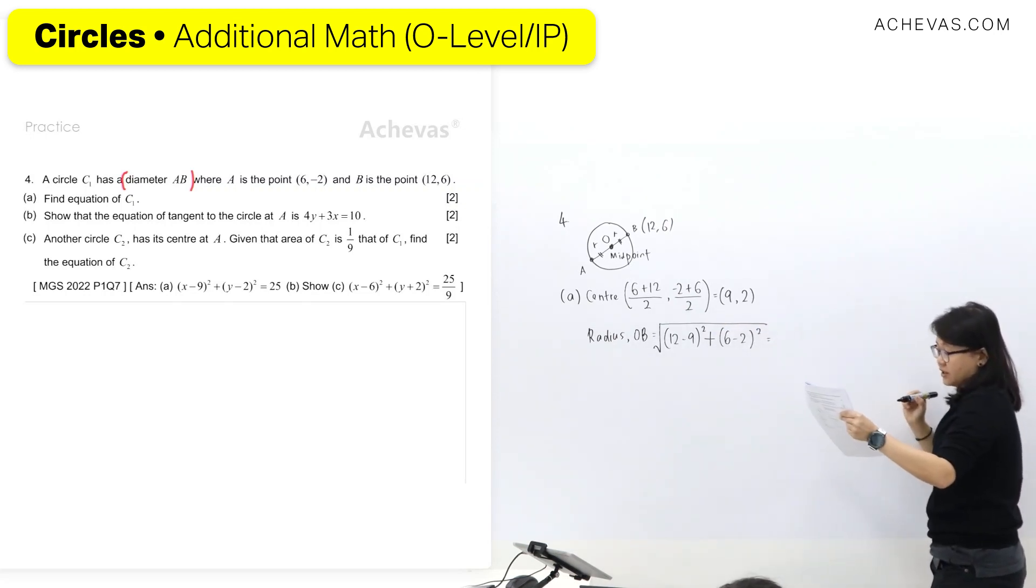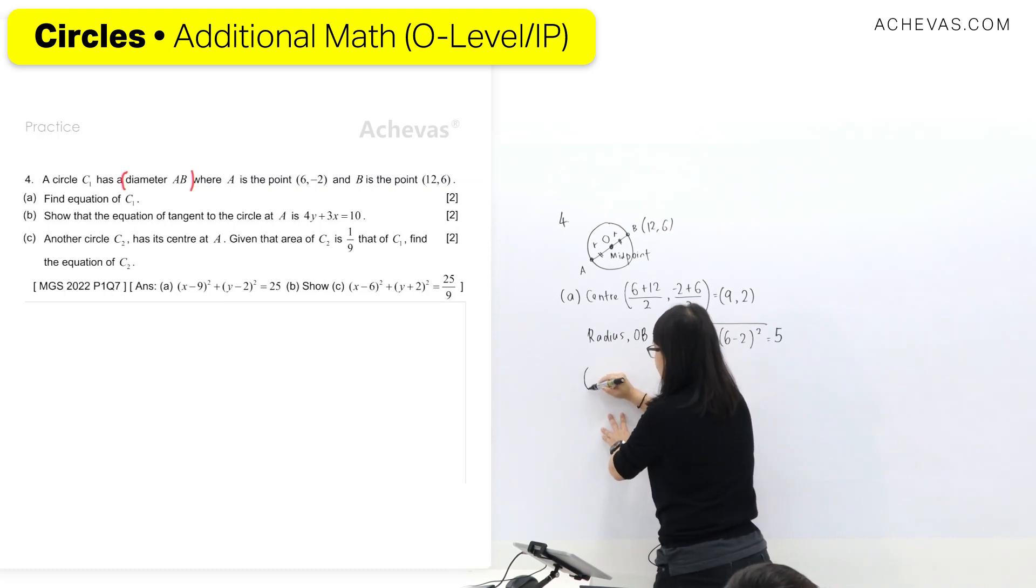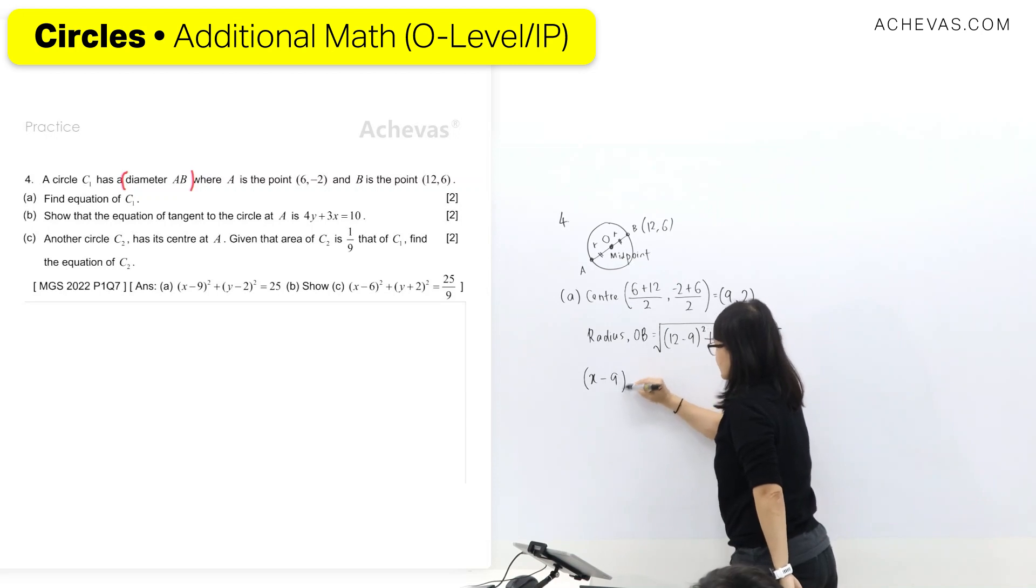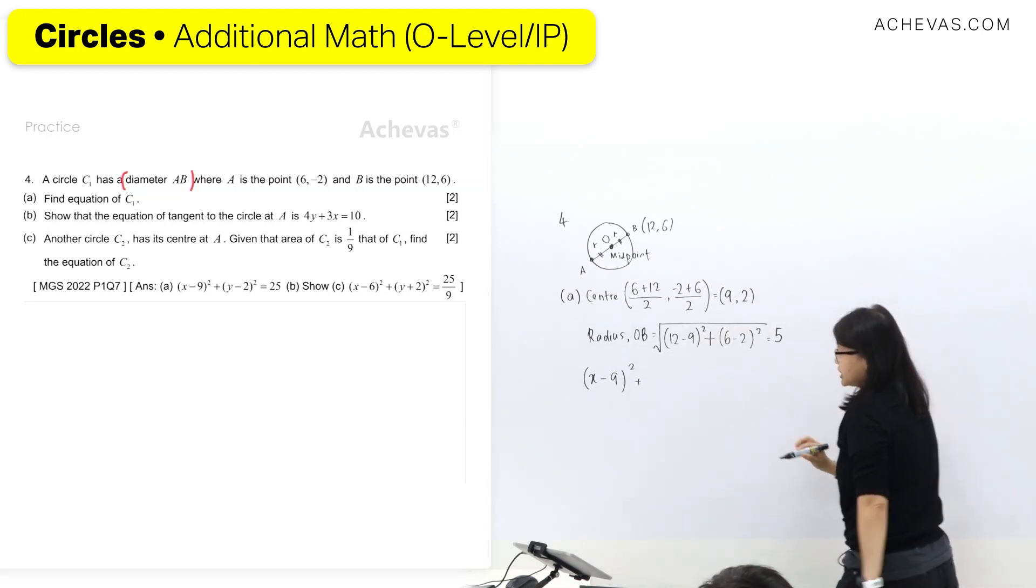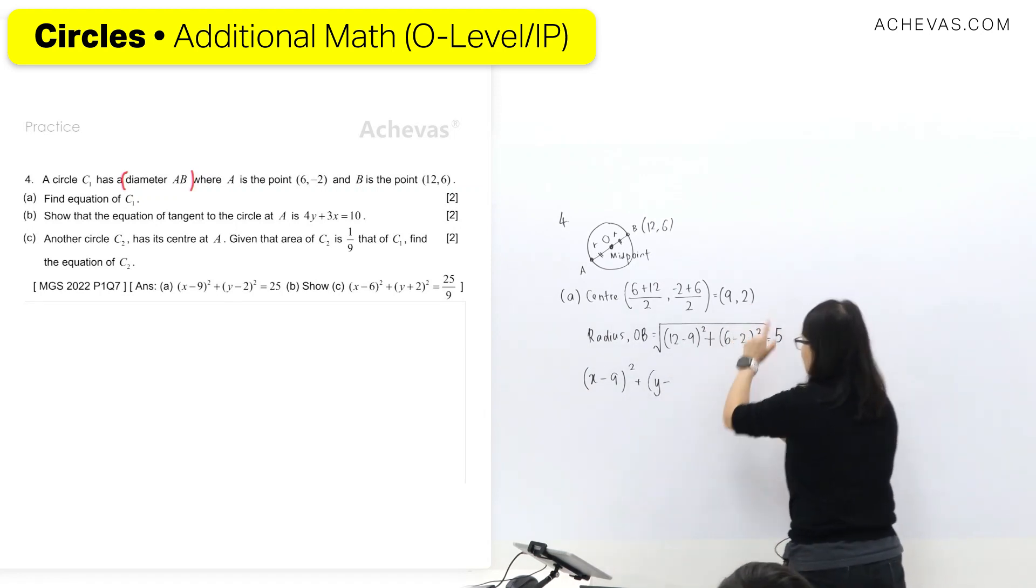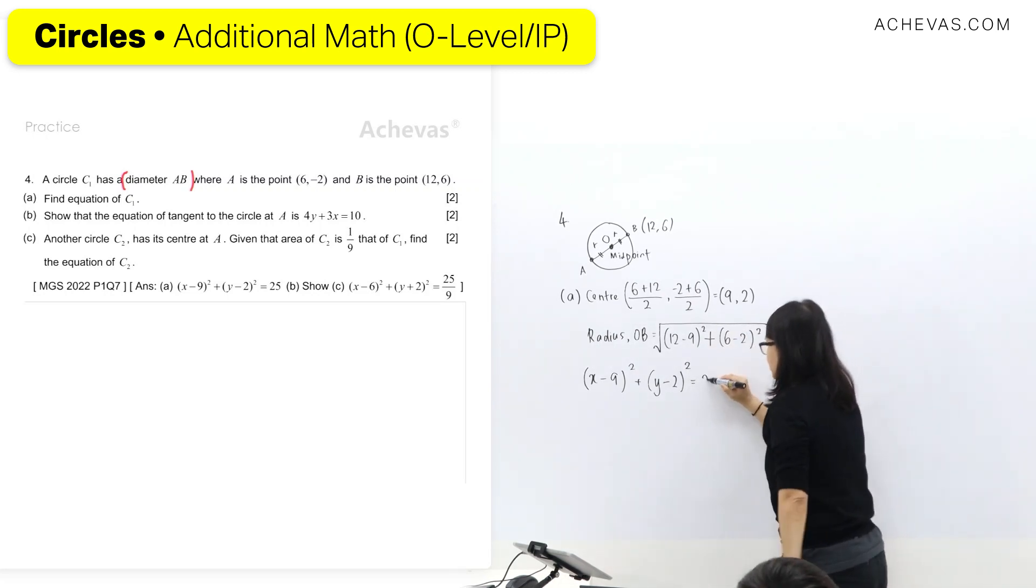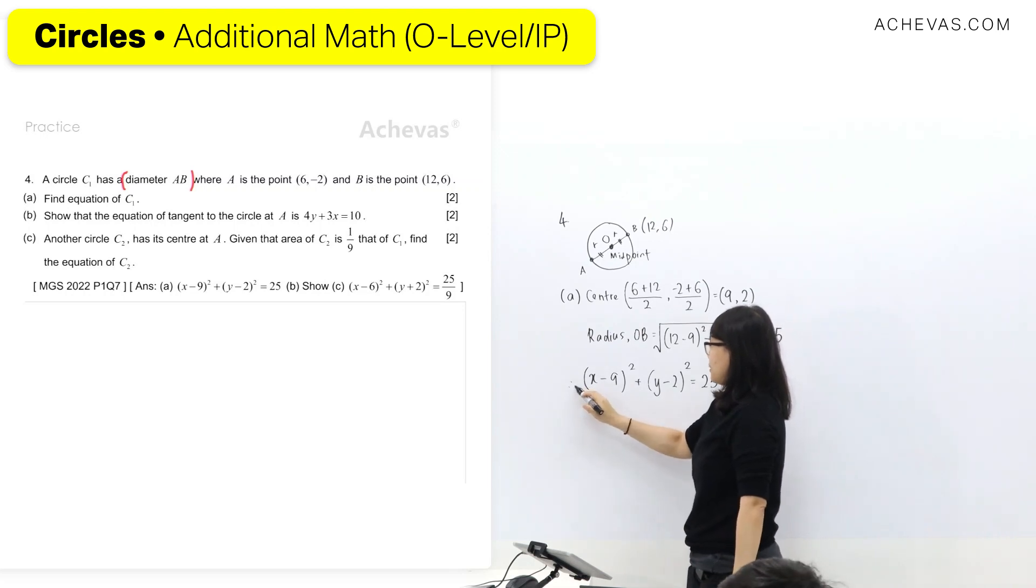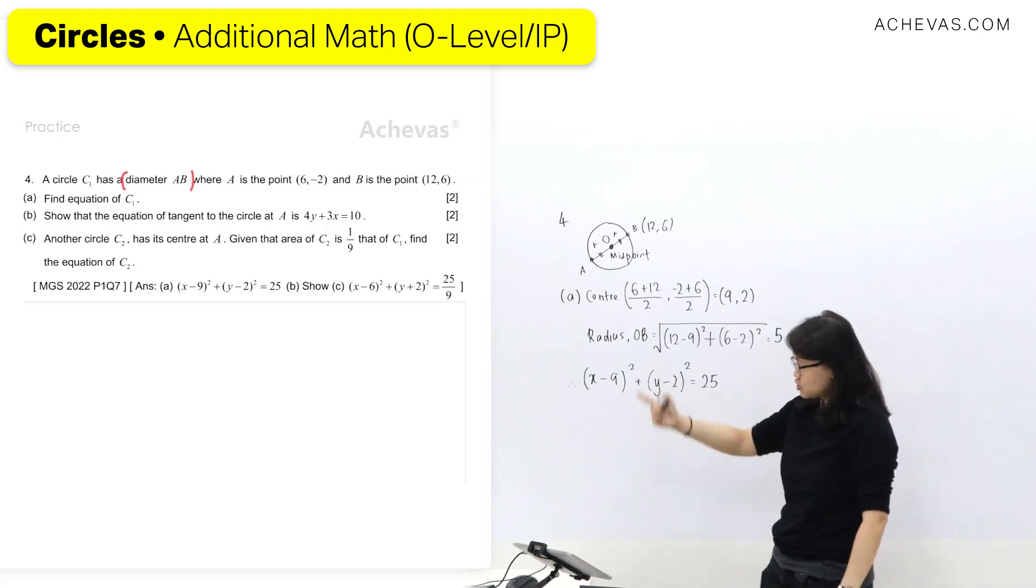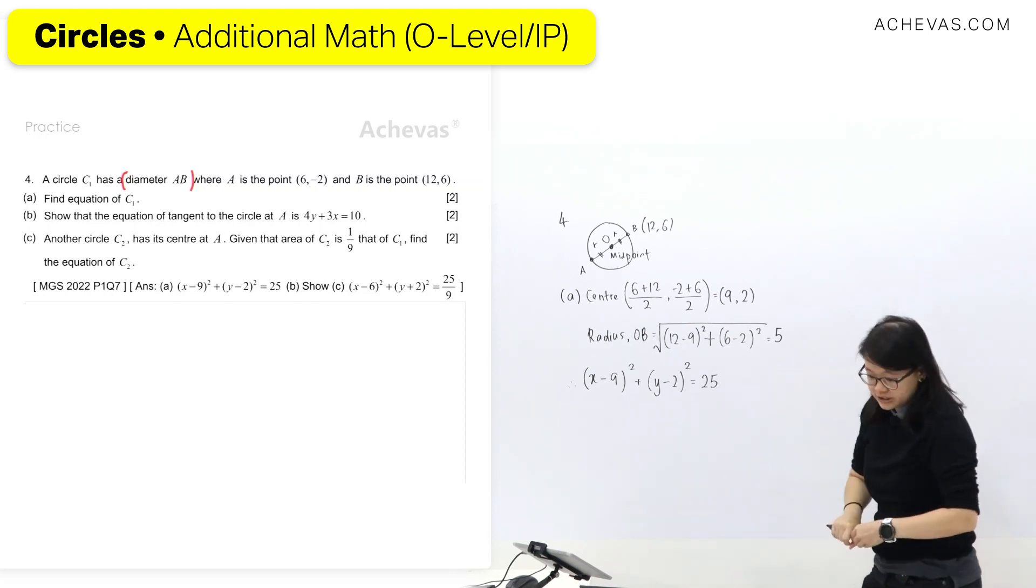So x minus x square plus y minus y square, then you calculate. This should be getting straight away the radius. Once we have center and radius to form the equation of circle, it's going to be (x - 9)² plus (y - 2)² equals to radius squared. I'm going to write 25. They didn't say any form, I'll leave it this one. I'm not going to expand, so we're done with question A.